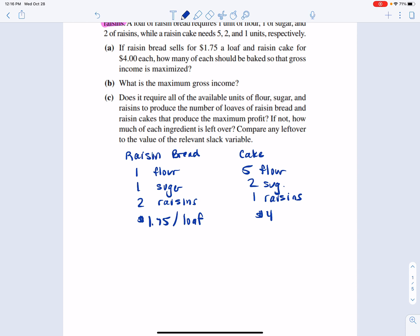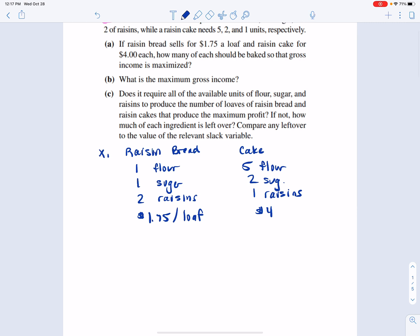And we're told that raisin bread sells for $1.75 a loaf, and raisin cake sells for $4 a loaf. So we want to know how many of each should be baked so that gross income is maximized. So my variables are quite clearly the number of loaves of raisin bread I'm going to sell and the number of loaves of raisin cake that I'm going to sell.